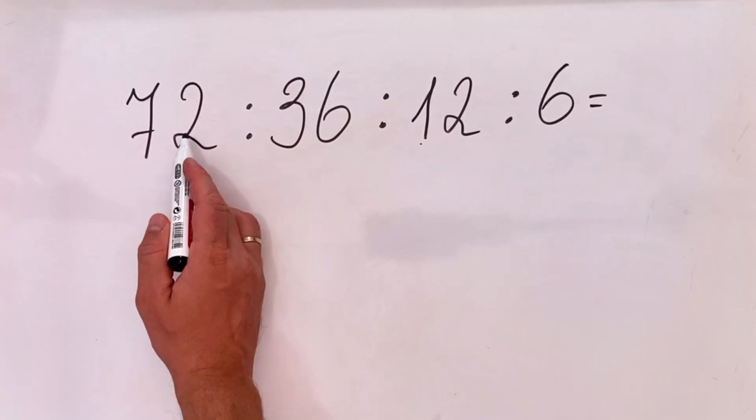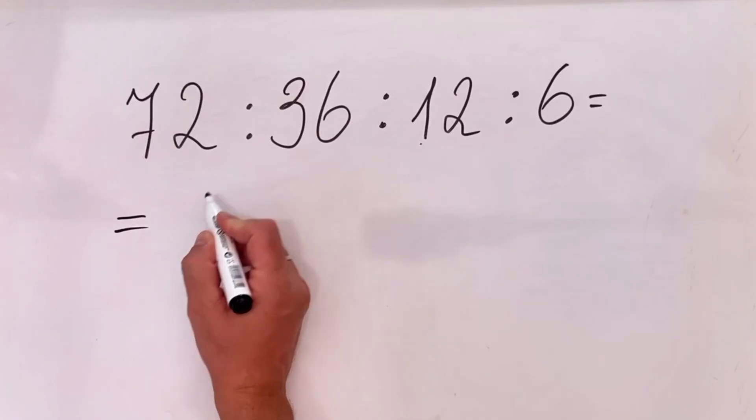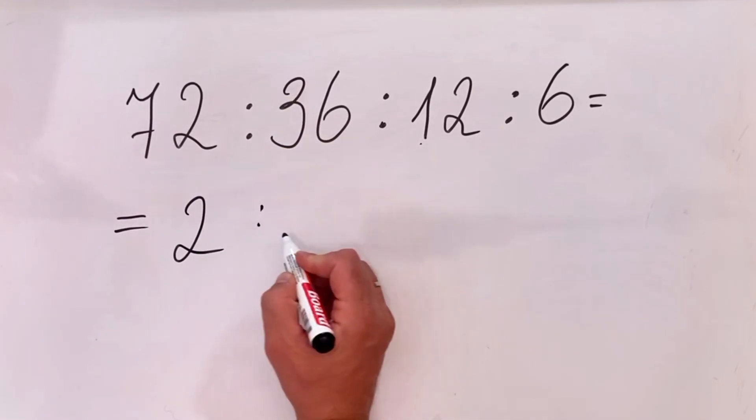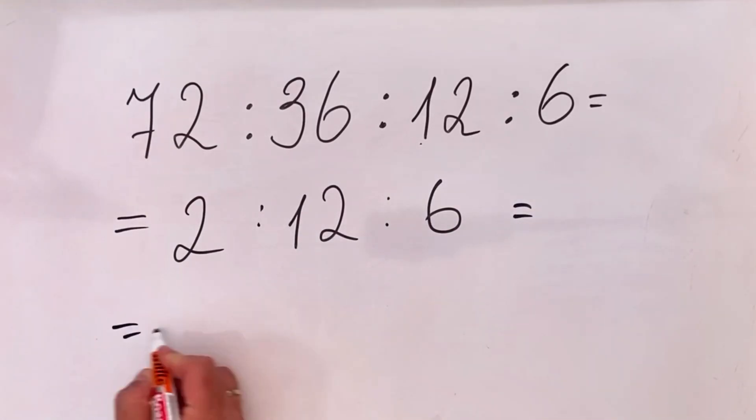72 divided by 36, which is 2. So we have 2 divided by 12 divided by 6.